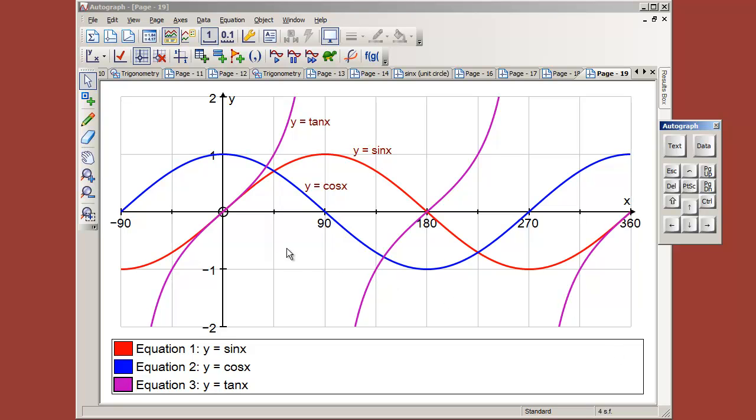In this tutorial we're going to have a look at trig functions in Autograph, starting off with working in the standard level, which is the level where there's no radians, it's all in degrees and there's no calculus options.